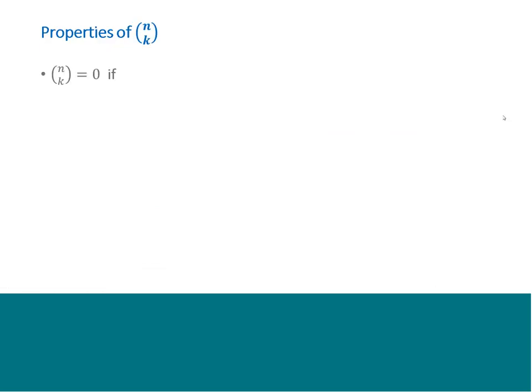A couple of properties of N choose K. First: N choose K is always a positive integer except when K is bigger than N — you can't select more objects than you have, so the result is 0. Second: N choose 0 is always 1 — there's one way to build the empty set. This is also the same as N choose N: you have N objects and select all of them — there's only one way to do that, just grab them all.